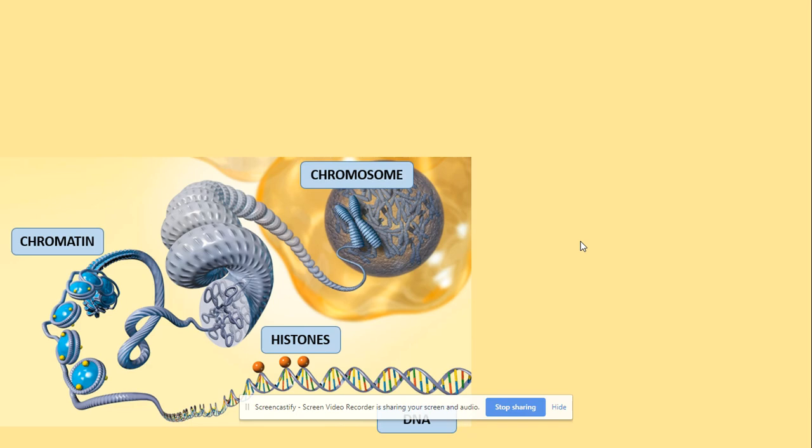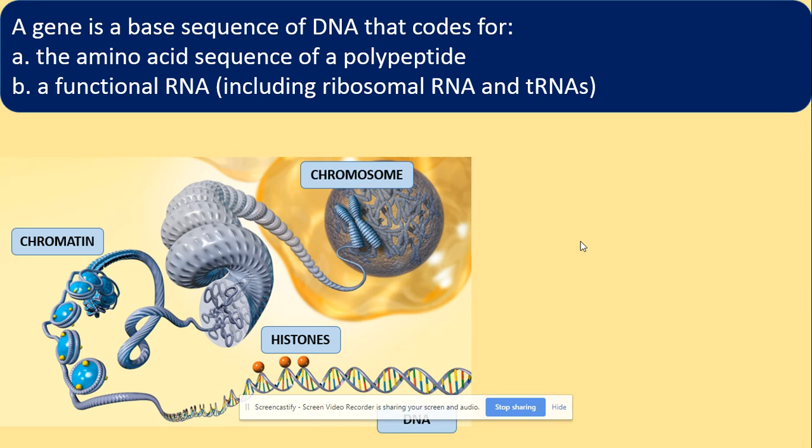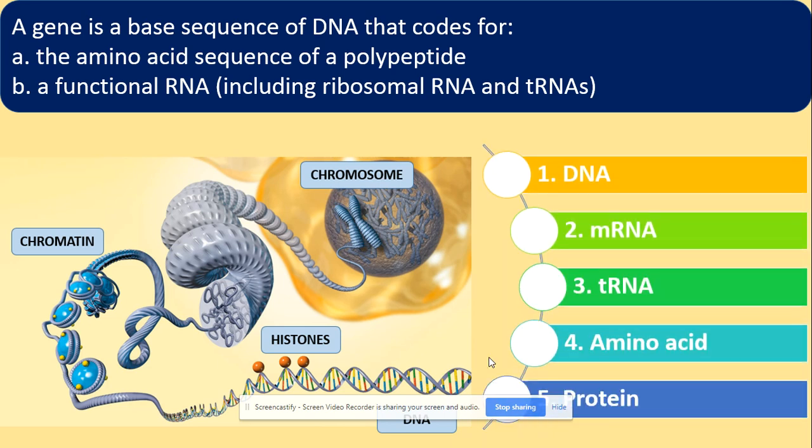We are looking at the regulation of transcription and translation. You need to know what a gene is — a gene is a base sequence of DNA that codes for the amino acid sequence of a polypeptide, but also a functional RNA. The pattern from DNA to protein follows: a gene affects the sequence of mRNA and tRNA, which brings amino acids joined by peptide bonds to form a protein.